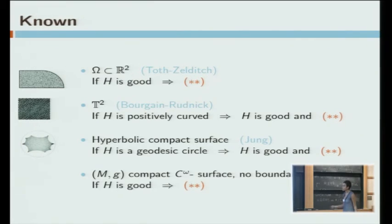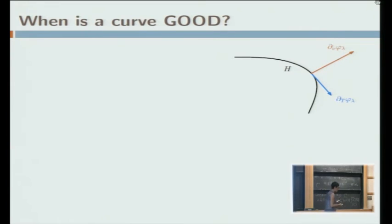This is my last slide. I'm going to try to explain what I know so far about when a curve is good or not. It turns out that you need to understand the behavior of the normal derivative of your eigenfunction and the tangential derivative of your eigenfunction along the curve. It is possible to prove this lower bound here. You get a lower bound for the L2 norm of the restriction of phi lambda to the curve in terms of the L2 norm of the tangential derivative along the curve of your eigenfunction.